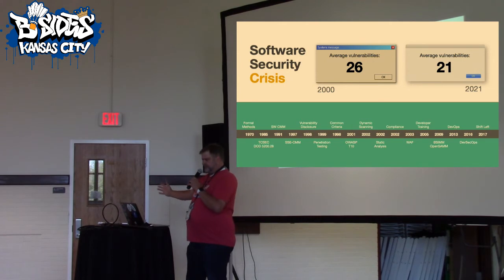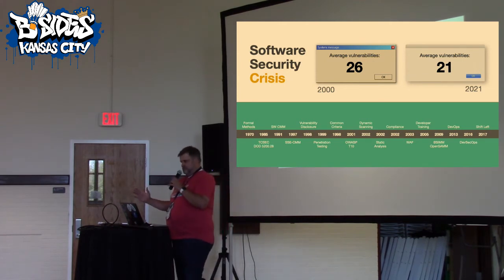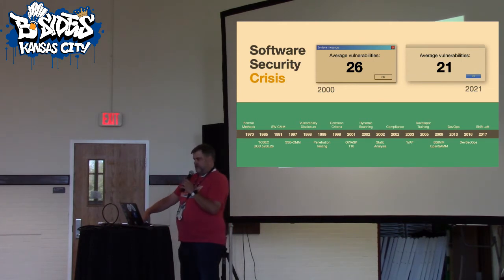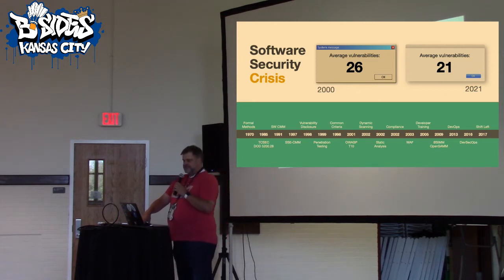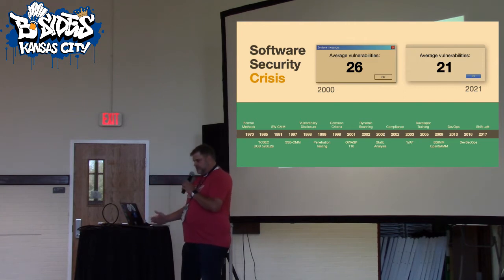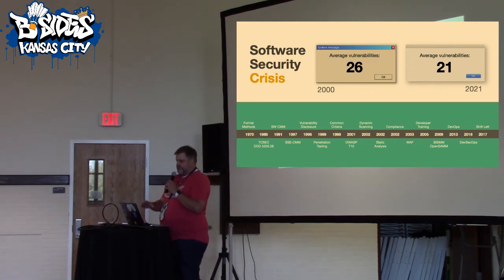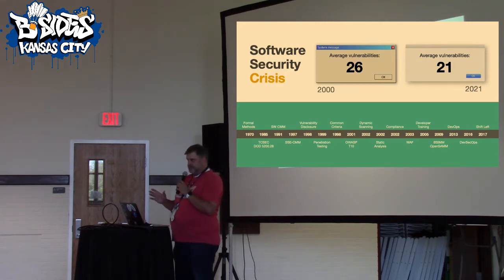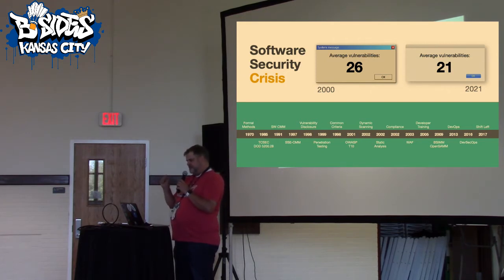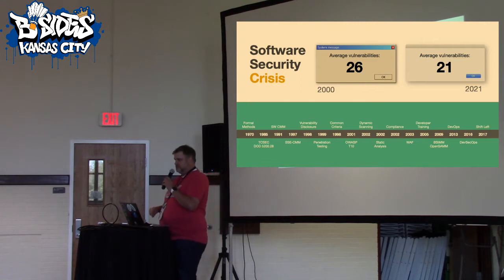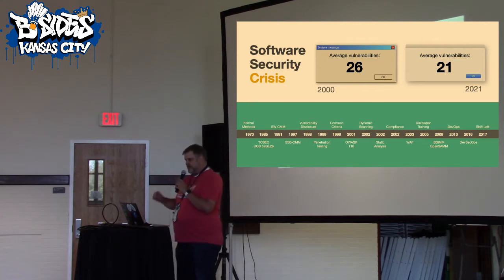Talking about applications over time — we've gone through this huge wave of application security, standards and movements, and this really started way back in 1970. When OWASP came along in the early 2000s, we started doing WAFs, dynamic scanning, static scanning. But if you look at the numbers, the average vulnerabilities of an app 21 years ago was about 26. Today it's 21. So that's about 1% improvement — another 100 years before we get to zero. We're not making great strides.